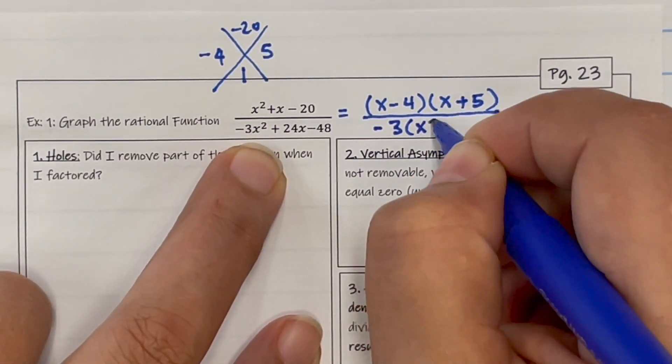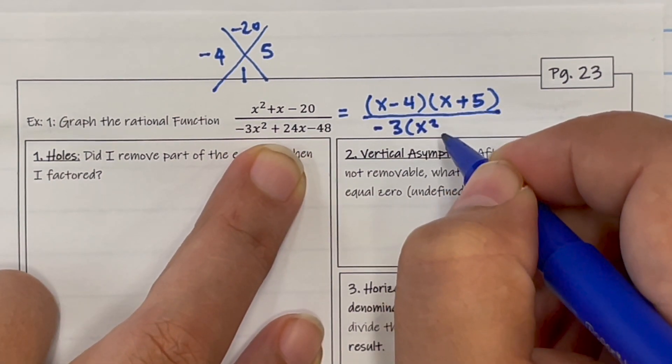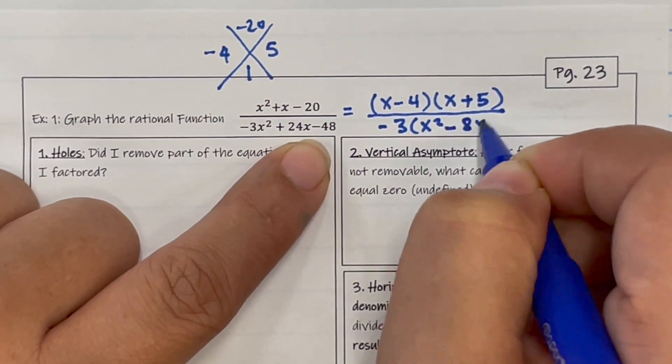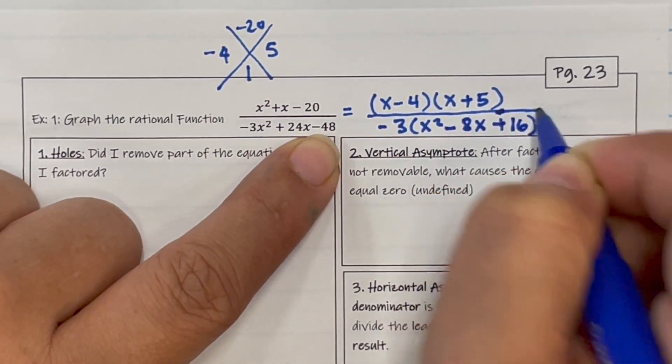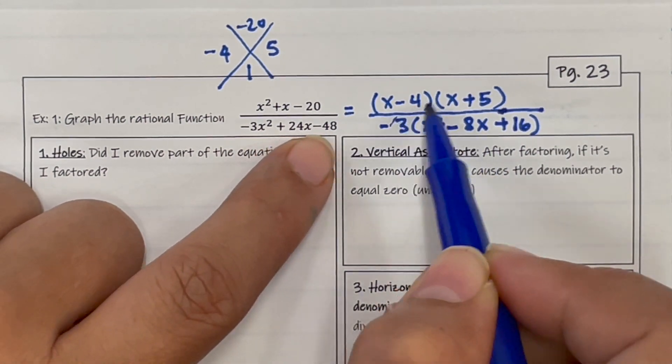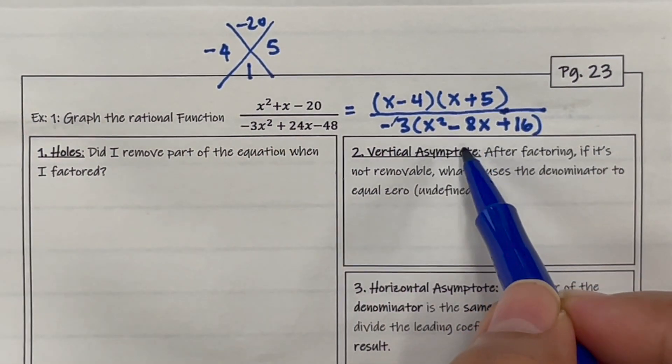And also 3 goes into everything in there. So taking out negative 3, I'm going to be left with x squared minus, because you're going to change the sign because you took a negative out, so minus 8x plus 16. And checking to just make sure that when I multiply it back in, I get the original function, which I do.